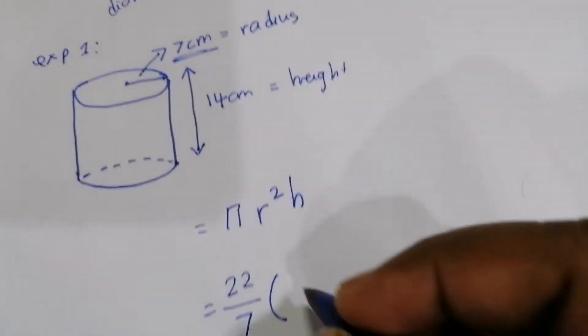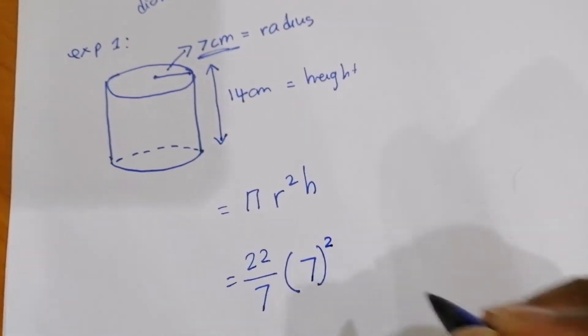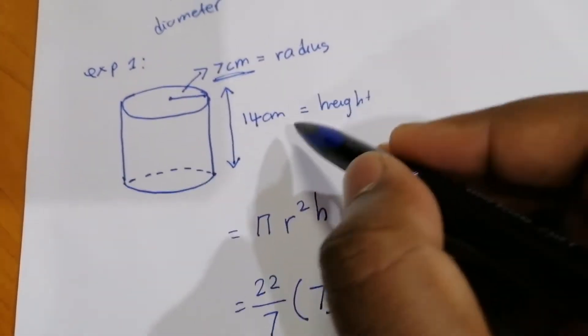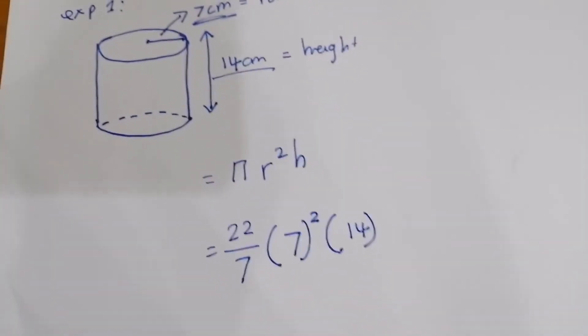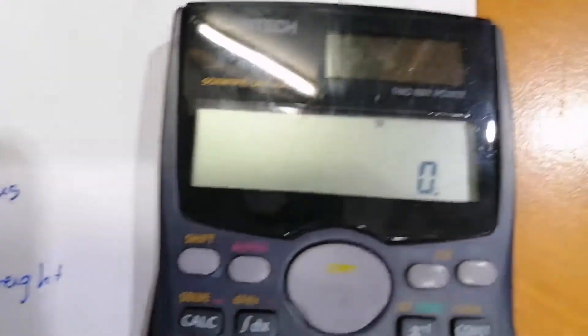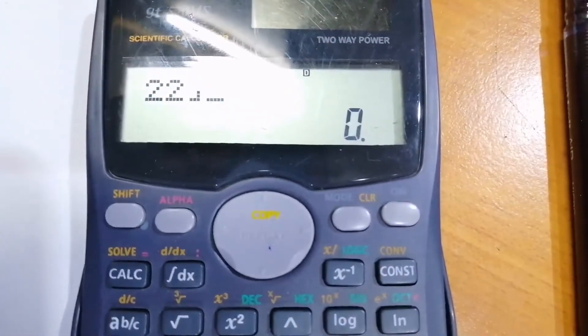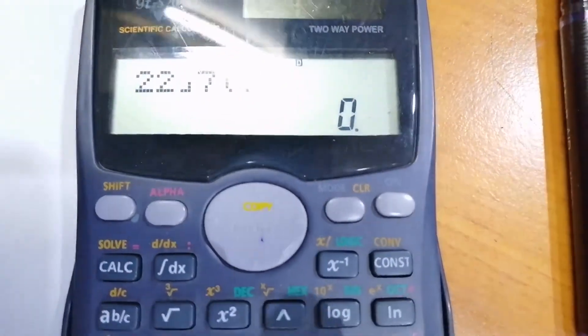π equals 22/7, r equals 7, and h is 14 cm, the height of the cylinder. Now we see how to get the answer using a calculator, so we just type the values.